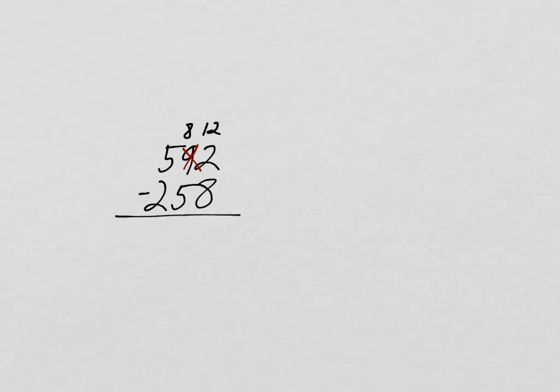Let's check our other place values to make sure we won't run into any other problems, because we want to do all this checking first. Can we take 5 tens from 8 tens? Sure. 2 hundreds from 5 hundreds? Yep. So, that was the only area where I'm going to run into a problem in this particular problem.